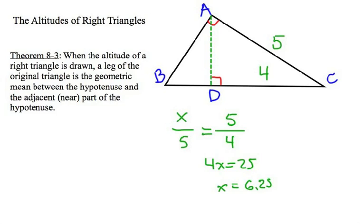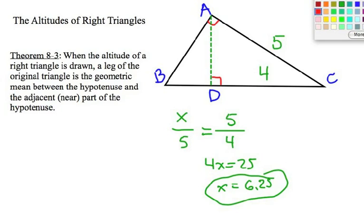So, the entire hypotenuse is 6.25, which must mean that the other part of the hypotenuse must be 2.25. And then we can solve other things from there.